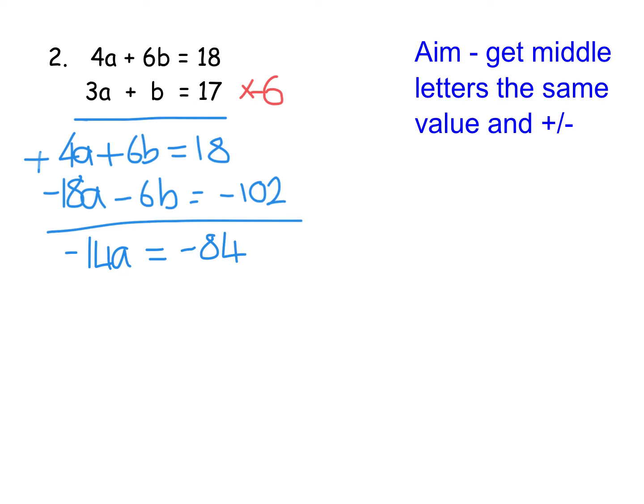That double negative is going to cancel out, so you're just going to have a equals 84 divided by 14, which is 6. If that was non-calculator and you were struggling, you could write it as the fraction 84 over 14, simplify to 42 over 7, which is 6. So you could always do that without a calculator. It divides nicely, so everything's looking good.